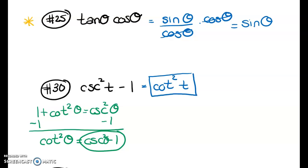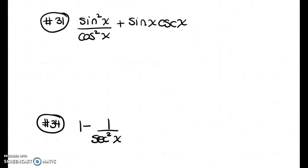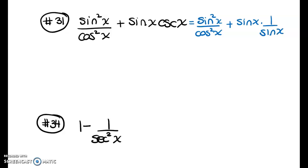For the next expression, I'll rewrite cosecant of x as its reciprocal, 1/sin x. This gives sine x over cos²x, plus sine x times 1/sin x. Since sine and cosecant are reciprocals, their product is 1, which is very convenient. That leaves sine²x over cosine²x.